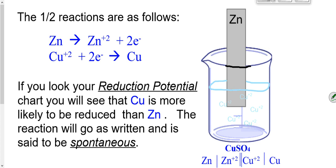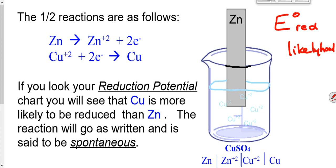If you go to your workbooks, the very first page you've been ignoring up until now, you'll find a reduction potential chart. Reduction potential is listed as E°red. This degree sign means we're using standard conditions — standard temperature and standard pressure. 'Red' stands for reduction, and this chart tells us the potential, or the likelihood, that something will be reduced. The bigger the value, the more likely it will be reduced.